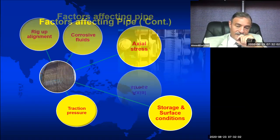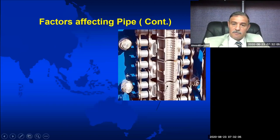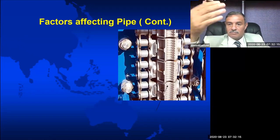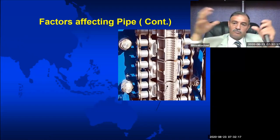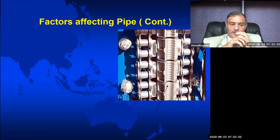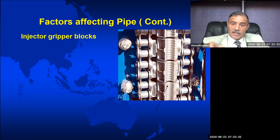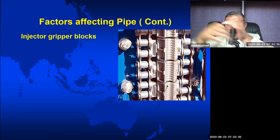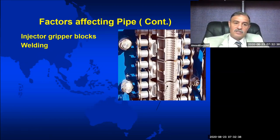We're still on the factors affecting pipe life. What you see in this picture is the chain, and here are the gripper blocks which grab on the pipe. We have two chains, one from each side — when you close them together, they grab on the pipe. These gripper blocks have teeth to grip on the pipe. If these teeth have a problem — if they are rusty or broken — when you grab on the pipe it will affect the pipe and definitely reduce its life.